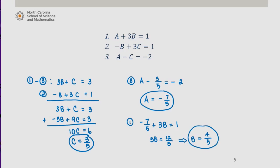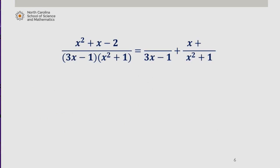So we found our three constants. So we have the following, negative 7 fifths, that was our A, over 3x minus 1, plus 4 fifths x, this was our B, plus 3 fifths, which was our C, over x squared plus 1. I'm going to factor out a 1 fifths, because that's common among all terms.